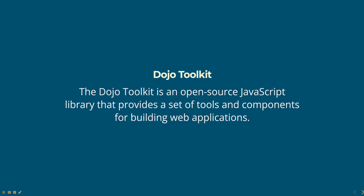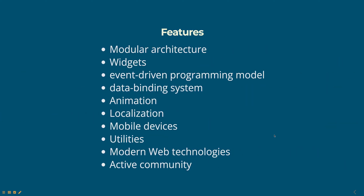It is designed to make it easier for developers to create dynamic and interactive web pages, and it provides a wide range of features such as modular architecture. Dojo is built on a modular architecture which allows developers to only load the parts of the library that are needed for a particular application. This helps to reduce the size of the code and improve performance.